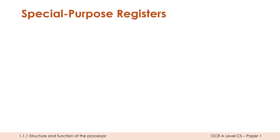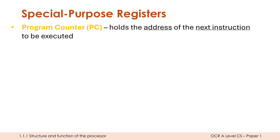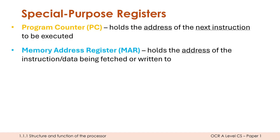There are five special purpose registers to learn for now. The first is the program counter, shortened to PC, which holds the address of the next instruction to be executed. It's not holding the actual instruction itself — it's holding the address. It's always keeping track of the next thing that needs to be done. The only other register which purely holds addresses is the memory address register, shown as MAR, which holds the address of the instruction or data being fetched from or written to memory.